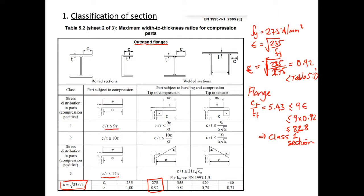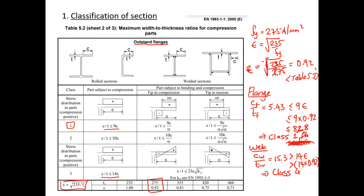Checking the web: cw/tw = 15.3, which is greater than 14ε = 14 × 0.92 = 12.88. This means the web is Class 4. Since the web governs, the overall section classification is Class 4.